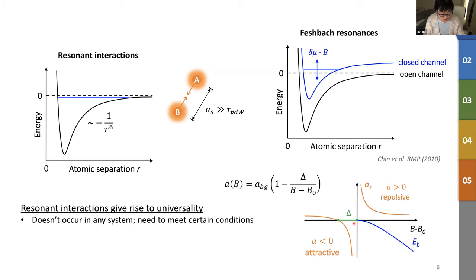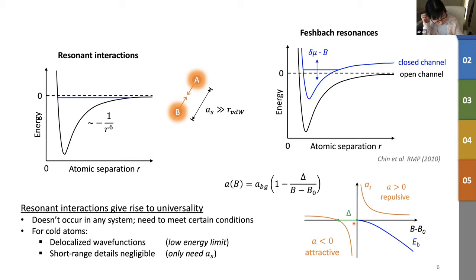And usually, such resonant interactions can give rise to universal scattering behaviors. And there sometimes can be misunderstandings about this concept of universality. So it doesn't mean that you can find the same behavior in any system. There are still some conditions that you have to meet. And for cold atoms, one such condition is that you have to have delocalized wave functions, which means that you need to work with the very low energy limit. And also it is desirable that you want to keep the short-range details of the potential negligible so that the scattering length a is the only length scale that you need to worry about. And as you can see in the later slides, some of these conditions actually can be pretty strict.